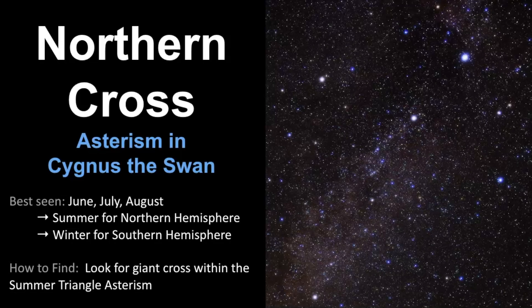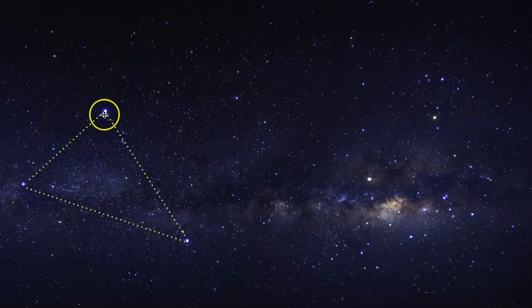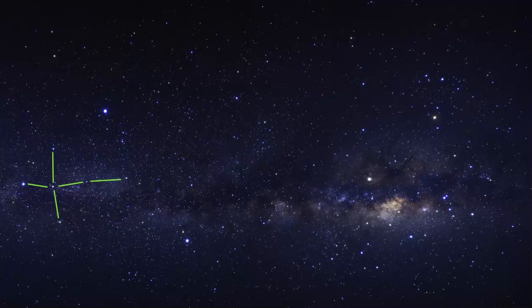We've come to the end of our video about the Northern Cross asterism located in Cygnus the Swan. It's best seen in June, July, and August — the summer months for the Northern Hemisphere and winter for the Southern Hemisphere — though ultimately your latitude will determine how long you can see it. The best way to find it is to look for the giant cross within the Summer Triangle asterism. I hope this video was helpful. It's one of the easier asterisms to find, very obvious in the sky. Take somebody outside with you to keep you company, and as always, keep looking up.